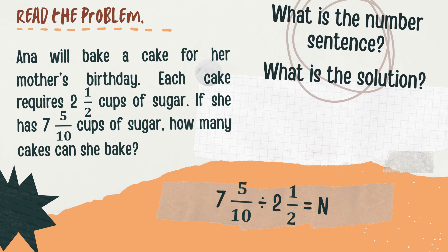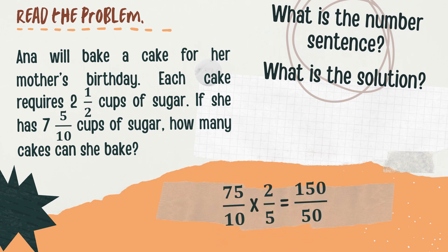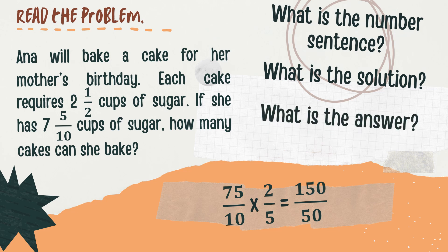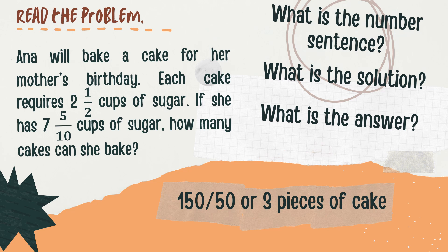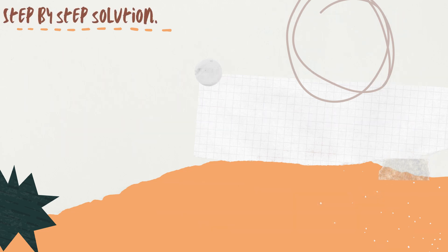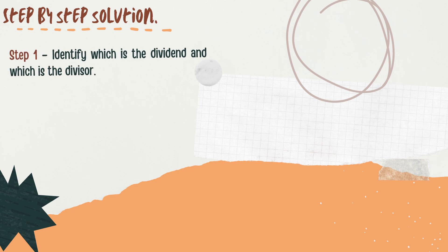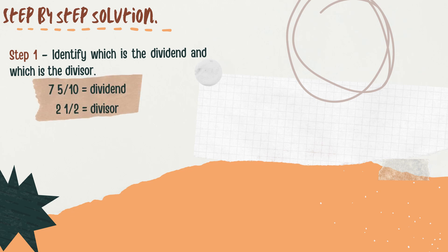What is the solution? 75 over 10 times 2 fifths equals 150 over 50. The answer is 3 pieces of cake. Let's find out how. Now let's solve the problem using the step-by-step solution. Step 1: Identify which is the dividend and which is the divisor. In the problem, 7 and 5 tenths is the dividend and 2 and 1 half is the divisor.